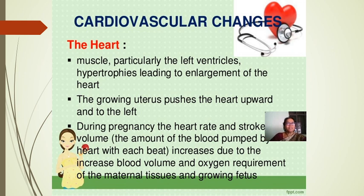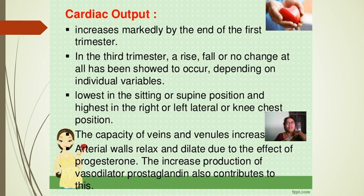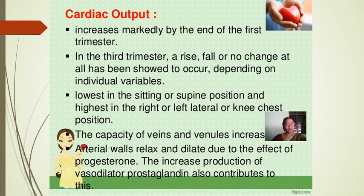Cardiovascular system: the left ventricular muscle hypertrophies, leading to enlargement of the heart. The growing uterus pushes the heart upward and to the left. Heart rate and stroke volume increase due to increased blood volume and oxygen requirements. Cardiac output increases markedly by the end of the first trimester; in the third trimester it is lowest in the sitting or supine position and highest in the right or left lateral or knee-chest position — that is why mothers are advised to lie in the left lateral position. Veins and venules expand, and arterial walls relax due to progesterone and vasodilator prostaglandins.